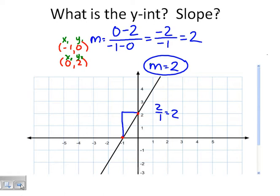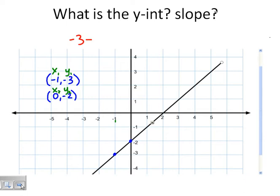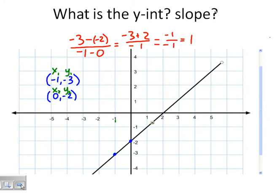Let's try another example. We have points (-1, -3) and (0, -2). Labeling x1, y1, x2, y2 and writing our formula, we have: (-3 minus a negative 2) divided by (negative 1 minus 0). When we subtract a negative we add, so that's negative 3 plus 2, which is negative 1, divided by negative 1. That's positive 1. So our slope is 1, exactly like we got when counting.